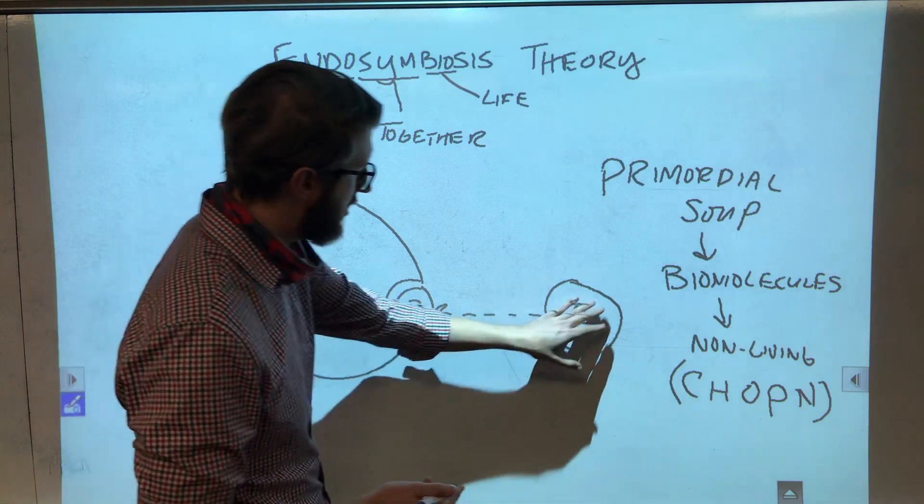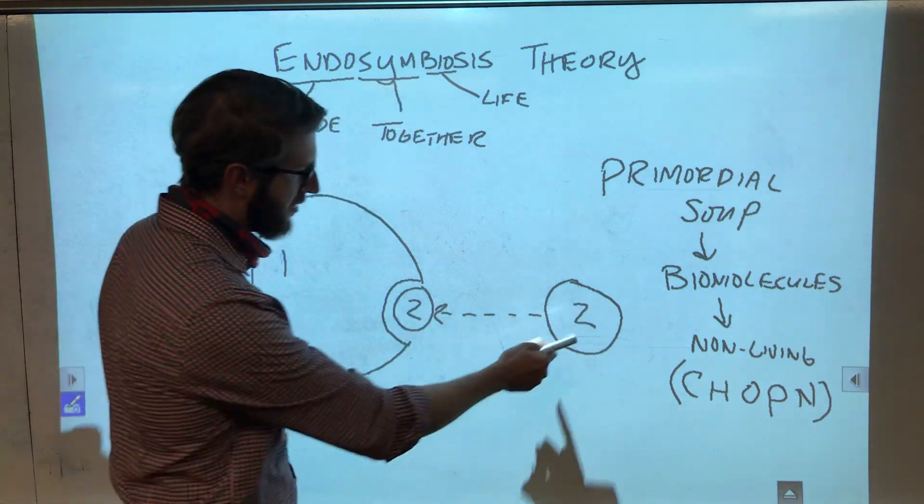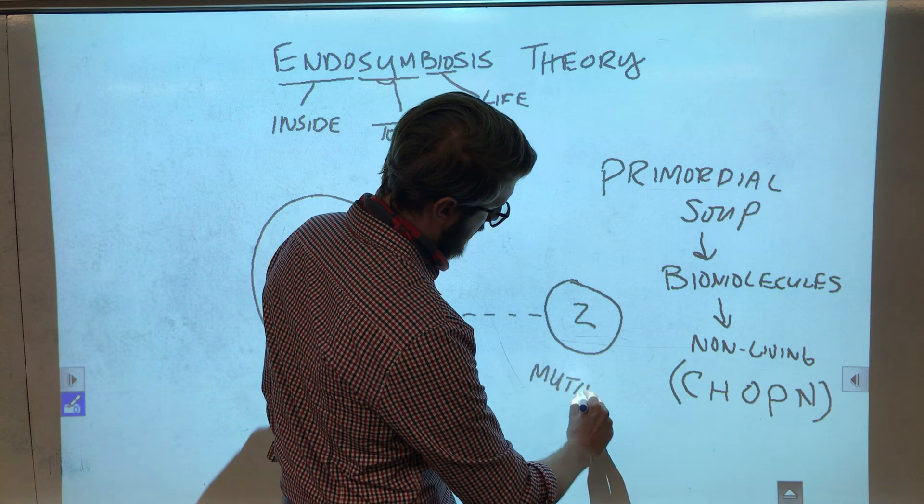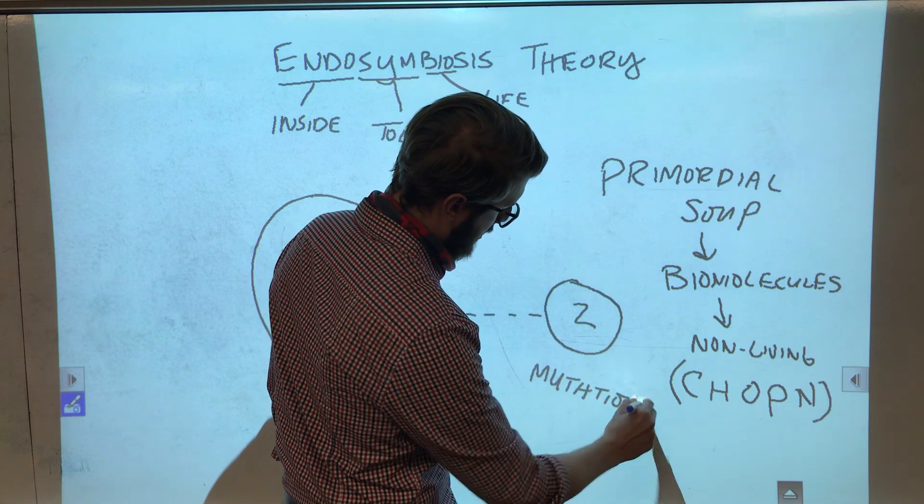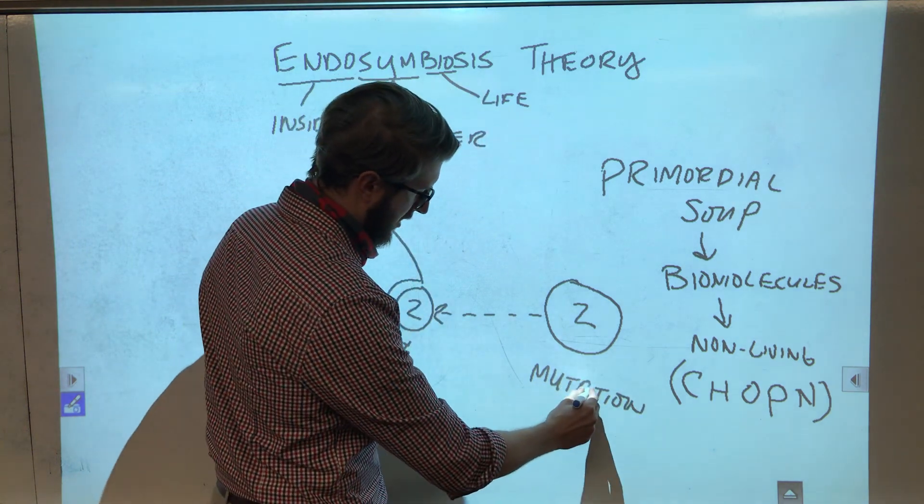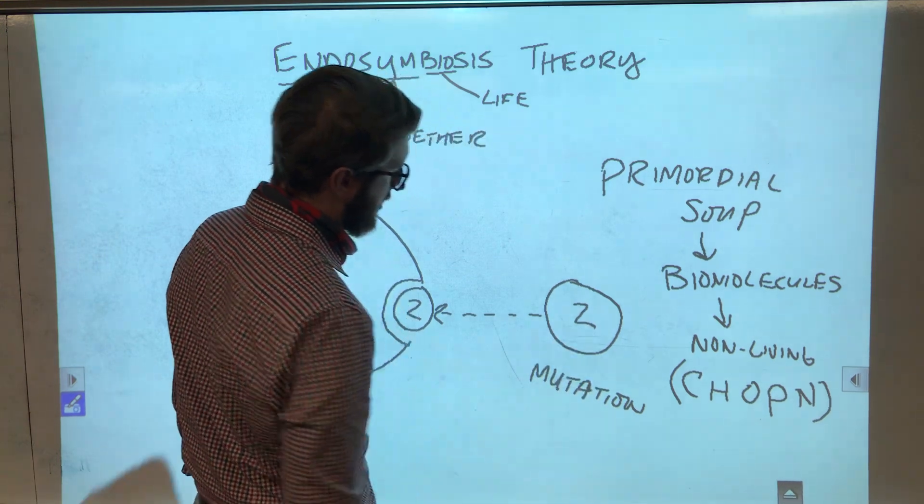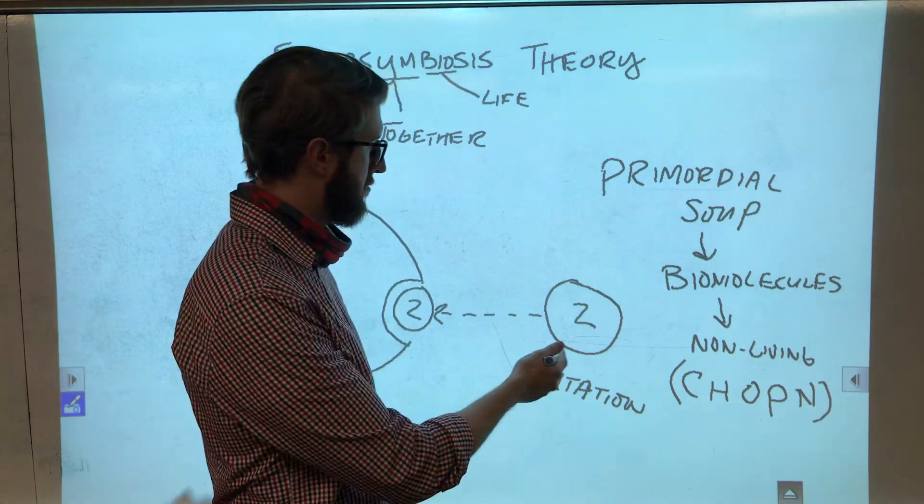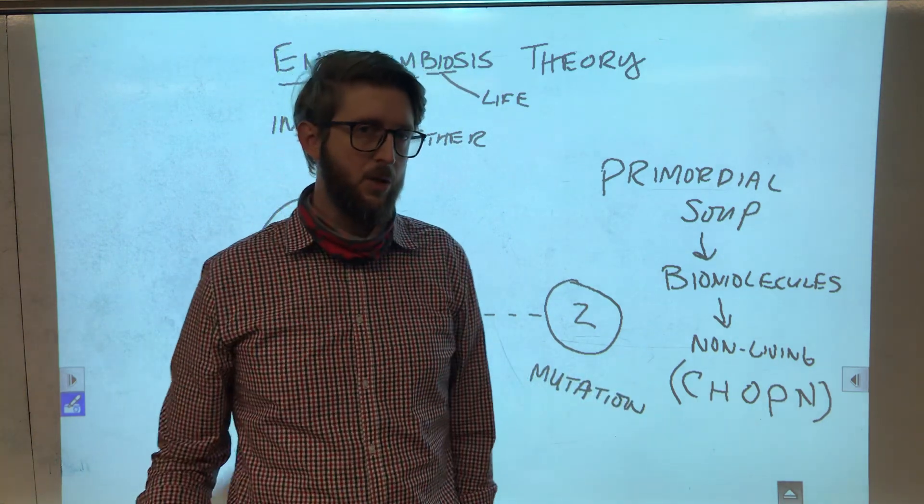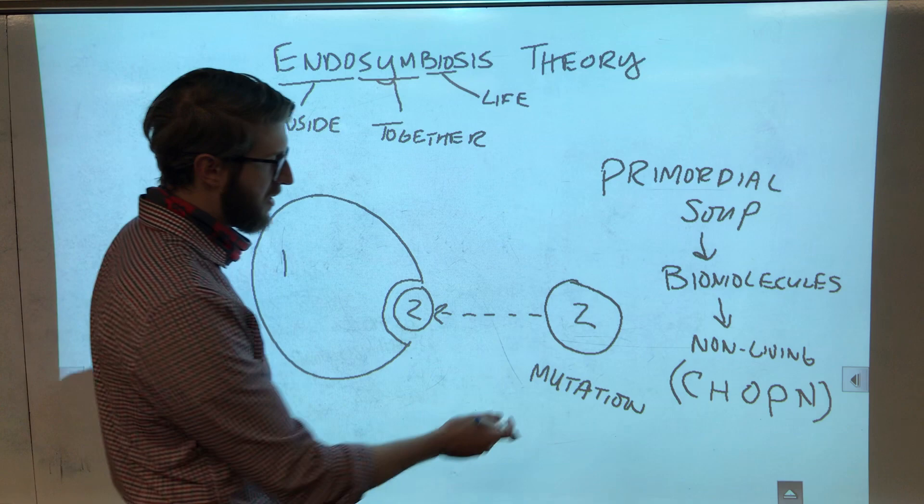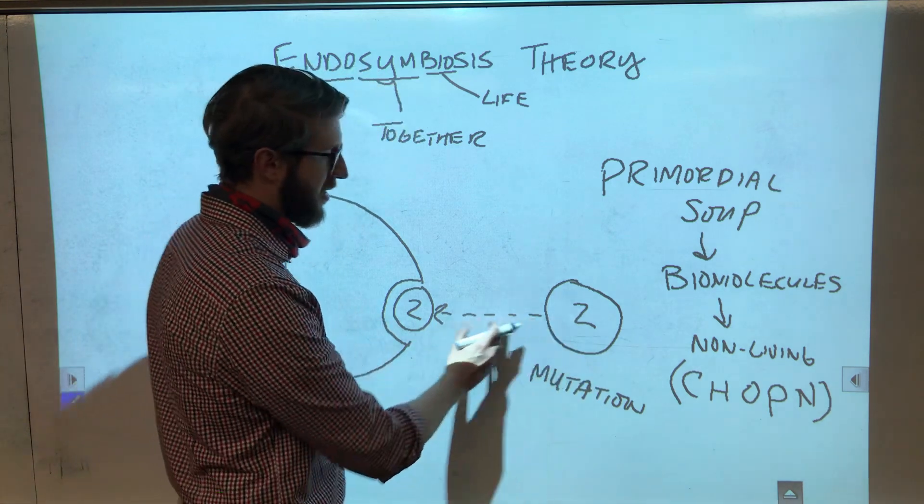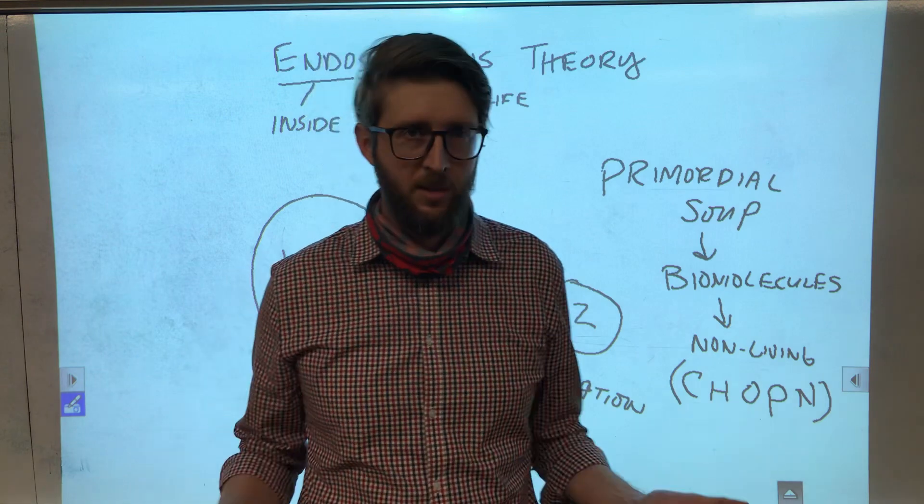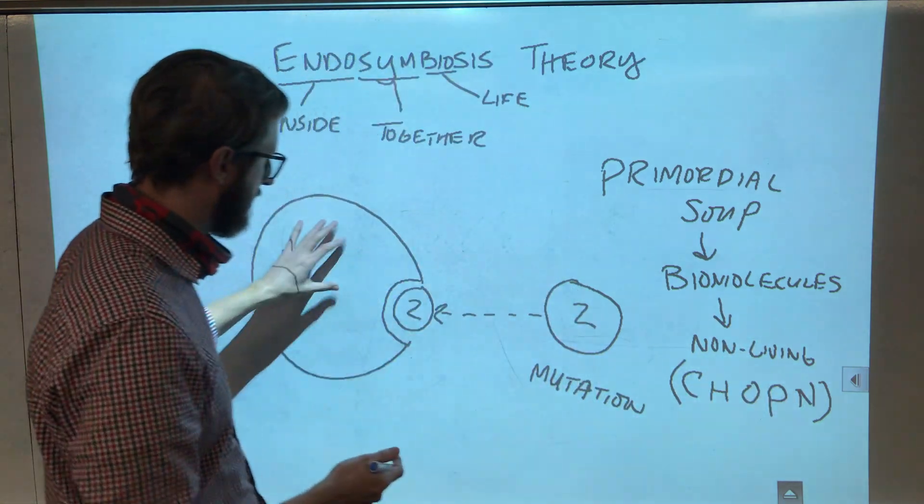But little cell two has, let's call it a mutation, because that's what it would have been called. But perhaps this cell has the ability to do something that not many other cells can do. Maybe this mutation gives this cell the ability to prevent it from being digested by larger cells like big cell one.